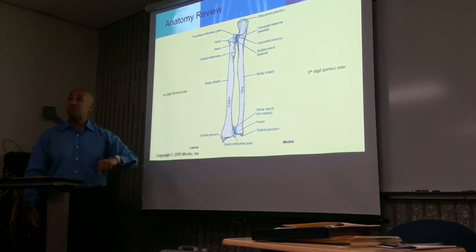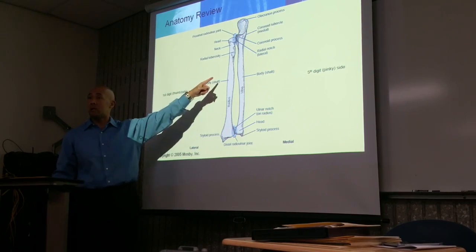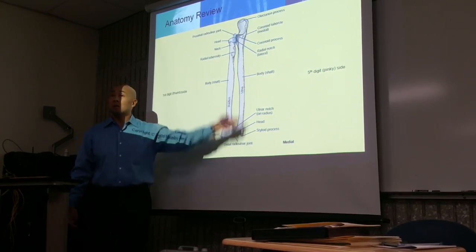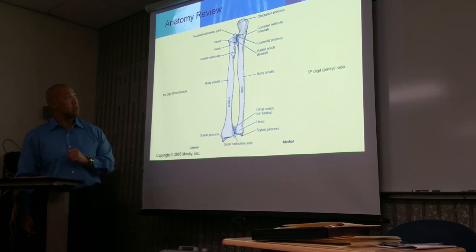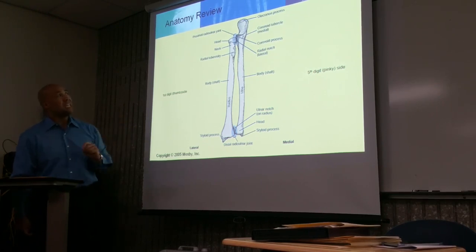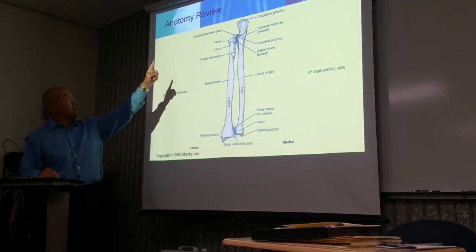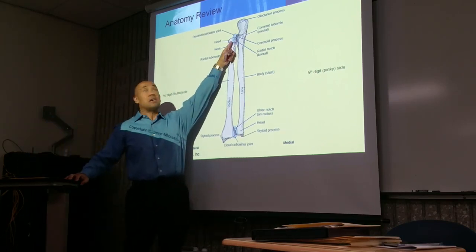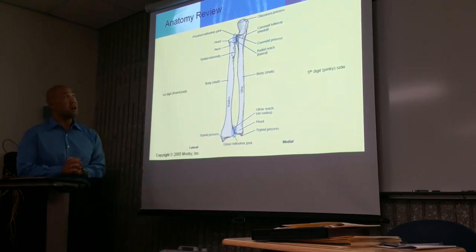It's the opposite with the ulna — the head of the ulna is towards the wrist, whereas the head of the radius is towards the elbow. The long part of the bone is the shaft or body. At the proximal radial ulnar joint there is an indentation on the proximal ulna that allows the head of the radius to articulate — this is known as the radial notch of the ulna.